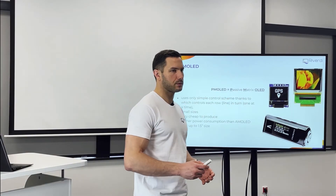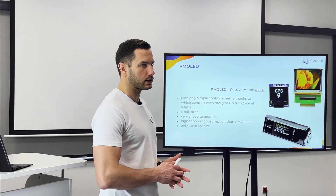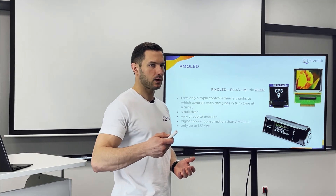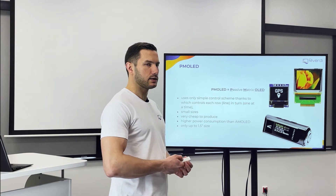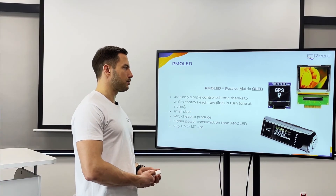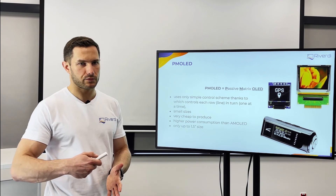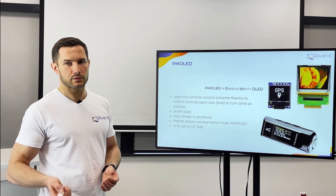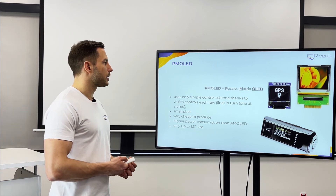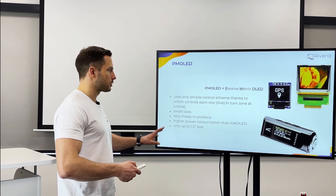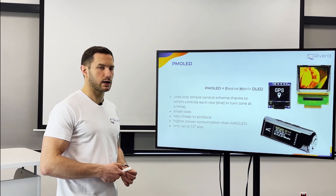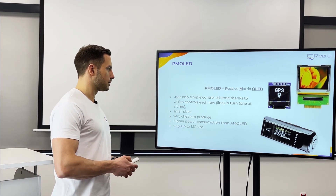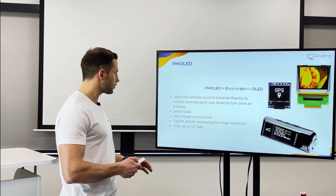If we want to make an active matrix OLED — like a TFT — we need to invest in masks that produce the transistors, which is very expensive. It could start from two hundred thousand dollars, five hundred thousand, or even a million dollars to make a mask for customization. So with PMOLED we are able in most cases to customize the display, whereas for active matrix it is very expensive.